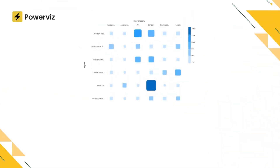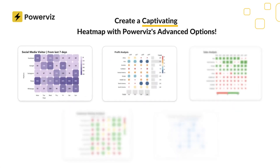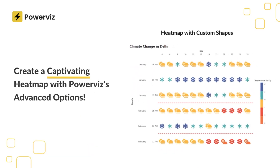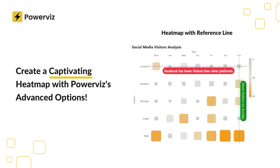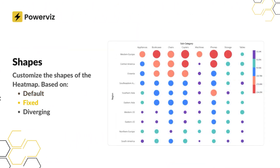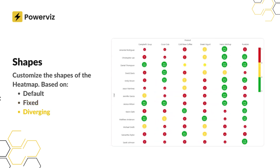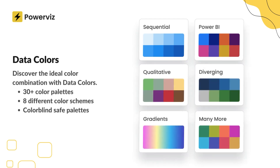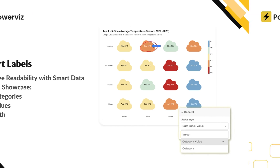Welcome to this detailed walkthrough of PowerWiz Heatmap, one of the most powerful custom visuals available for Power BI. Whether you're visualizing data intensity or comparing values across multiple categories, the heatmap by PowerWiz is designed to help you transform complex data into clear, actionable insights. I'll guide you through the key features, from setting up color gradients and labels to customizing axes, gridlines, and conditional formatting. By the end of this tutorial, you'll know how to fully leverage this visual to enhance your Power BI dashboards.